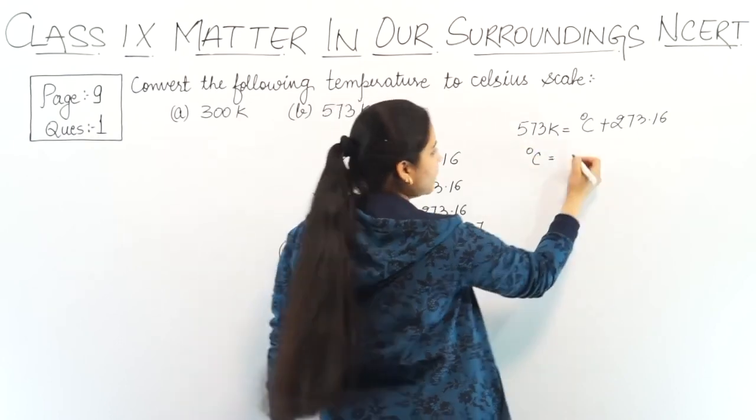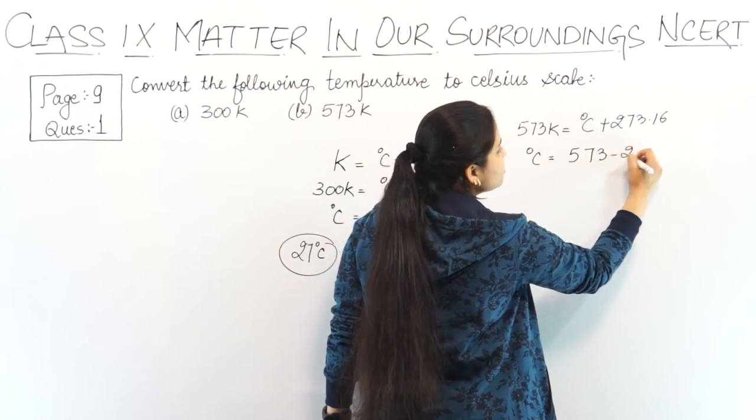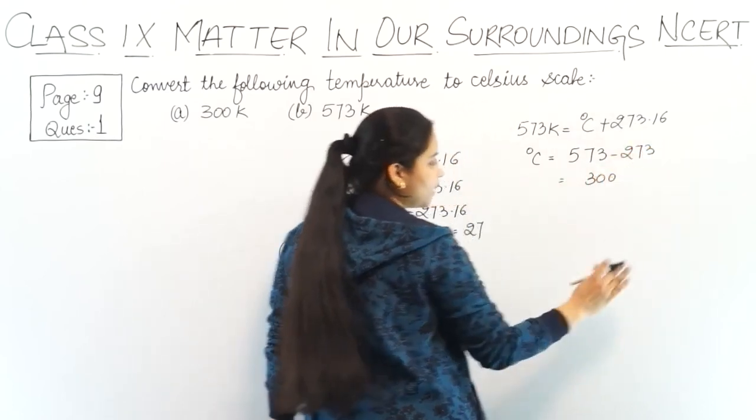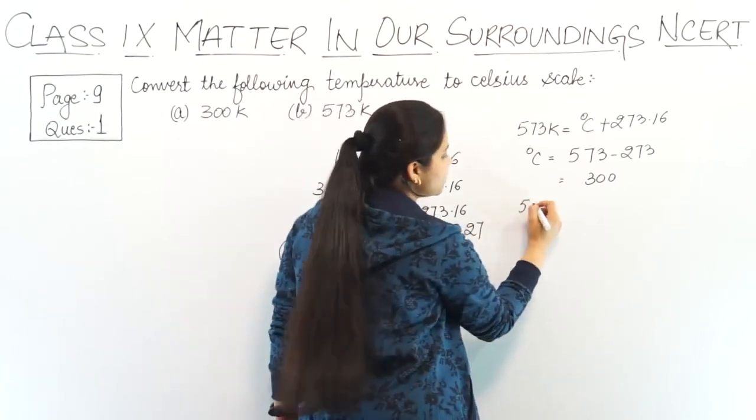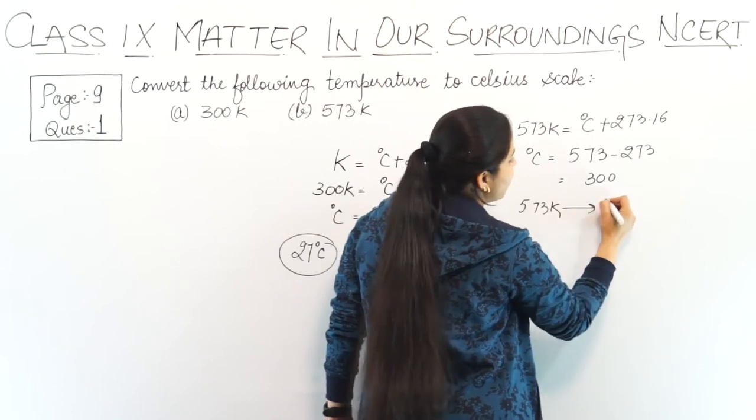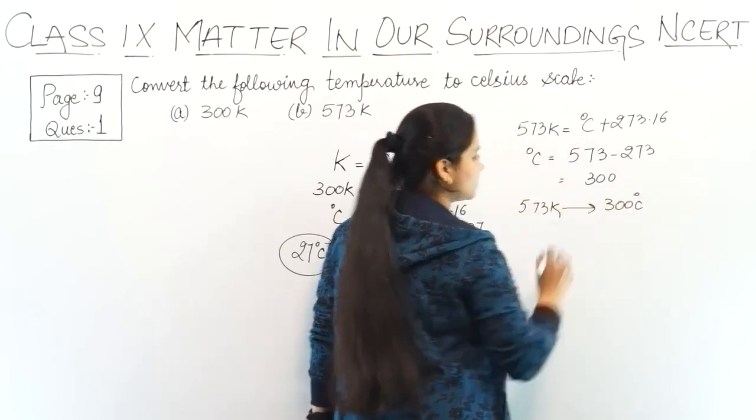So what is the temperature in degree Celsius? It is 573 minus 273, which becomes 300. So when I convert 573 Kelvin to degree Celsius, the answer is 300 degrees Celsius.